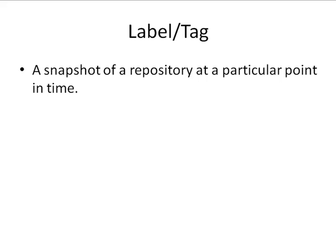The next term I want to go over is label or tag. Commonly this will be referred to as a tag, but sometimes it's referred to as a label. It's basically a snapshot of the repository at a particular point in time. This is very similar, and in a lot of version control systems, it's essentially the same exact thing as a branch.